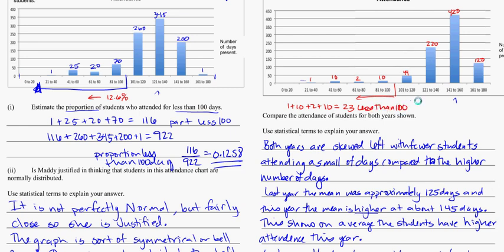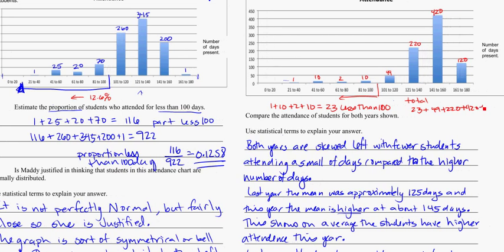And the total here, if we add that up, so 23 plus 49 plus 220 plus 420 plus 120. That's going to add up to 832,